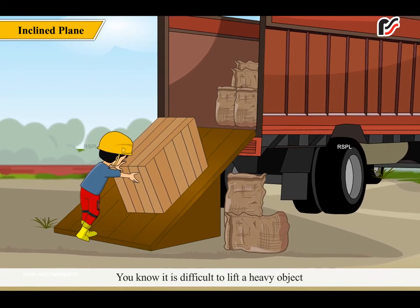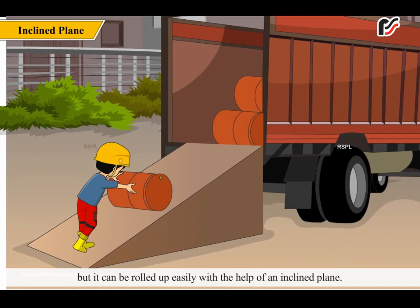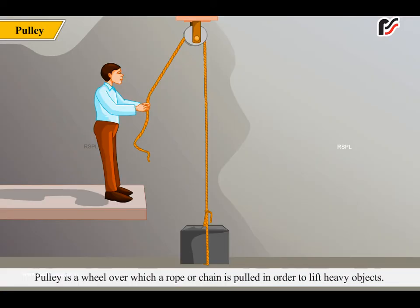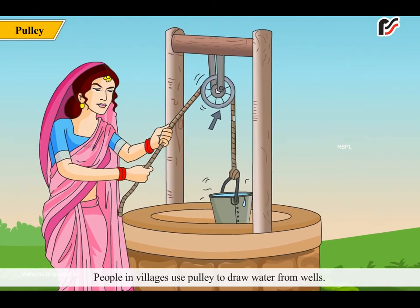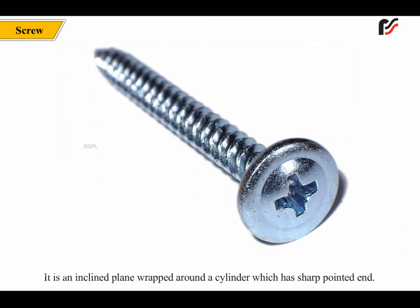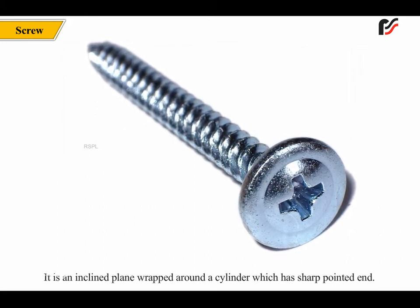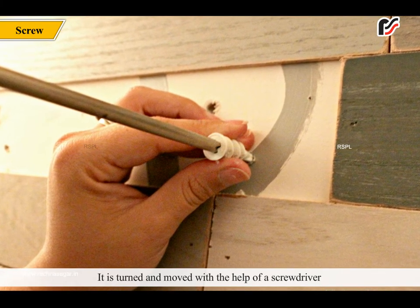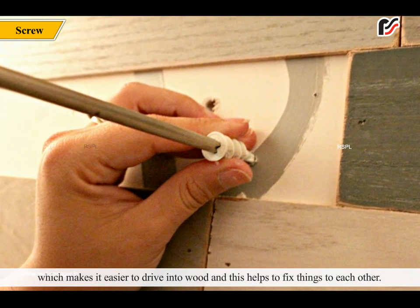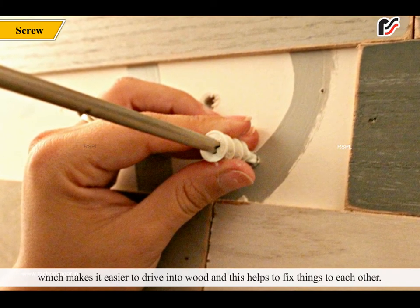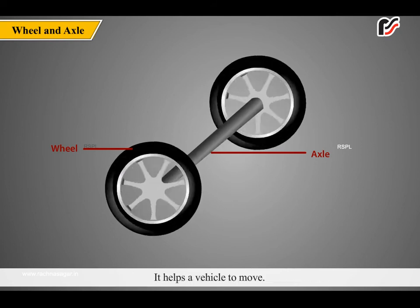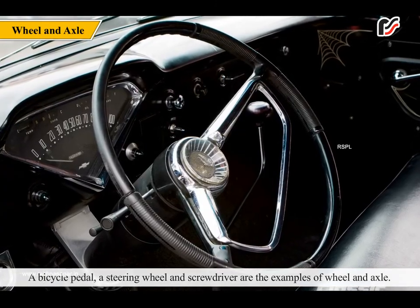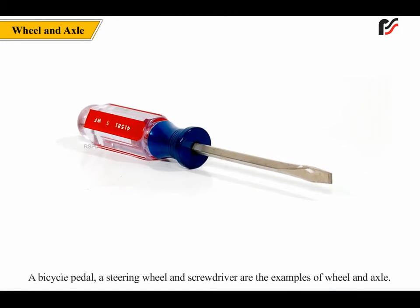A surface which is raised from one end is called an inclined plane. It is difficult to lift a heavy object, but it can be rolled up easily with the help of an inclined plane. Pulley is a wheel over which a rope or chain is pulled in order to lift heavy objects. People in villages use pulley to draw water from wells. A screw is an inclined plane wrapped around a cylinder which has a sharp pointed end. It is turned with the help of a screwdriver to drive into wood and fix things together. Wheel and axle is a simple machine in which a wheel revolves on an axle. It helps a vehicle to move. A bicycle pedal, a steering wheel and screwdriver are examples of wheel and axle.